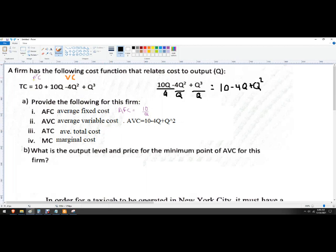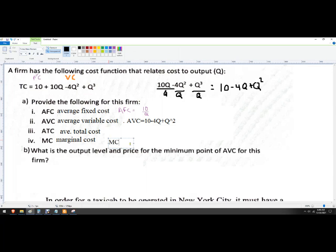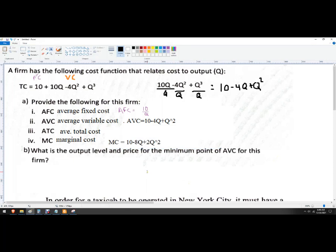Finally, marginal cost, we're just going to take the partial derivative with respect to Q of this whole thing. So the 10 is just a constant, so it goes away. That makes sense, because fixed costs don't change the marginal cost. So empirically, that makes sense. And then I've got minus 8Q plus 2Q squared. And that's your marginal cost.